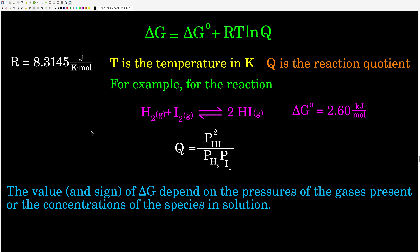Next we have another very useful equation — write this one down. This says that delta G for a process, which is the thing that determines spontaneity under those conditions, is equal to delta G zero plus RT times the natural log of the reaction quotient Q. R is the gas constant 8.3145 joules per kelvin·mole, and T is temperature in Kelvin. Remember the reaction quotient Q from the equilibrium module — it looks exactly like the equilibrium constant except it's not necessarily at equilibrium.